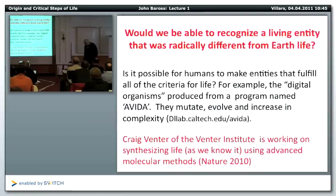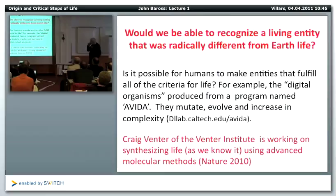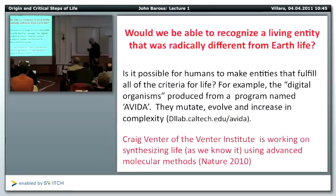There's a digital organism program at Caltech — the AVIDA program — that is essentially getting mutation and evolution going on in a digital organism and showing that Darwinian evolution actually does occur digitally. If you want, you can go to that particular web page — it's very interesting.